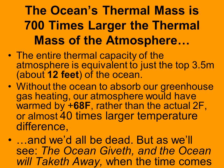Another way to look at this: the ocean's thermal mass is about 700 times bigger than the thermal mass of the atmosphere. The entire thermal capacity of the atmosphere is equivalent to just the top 12 feet of the ocean. The rest of the three and a half kilometers of ocean are on top of that — that's why 93% of our heating has gone into the oceans.